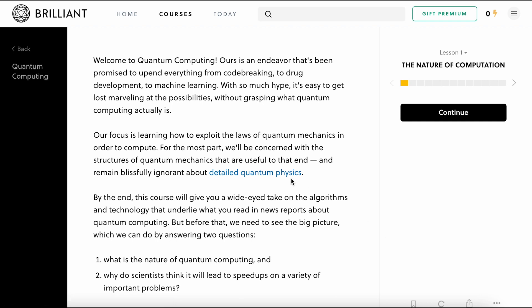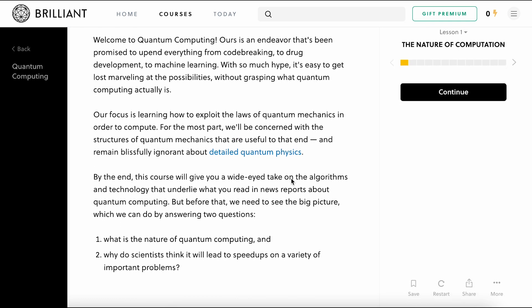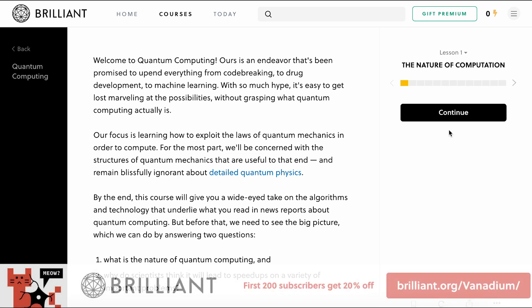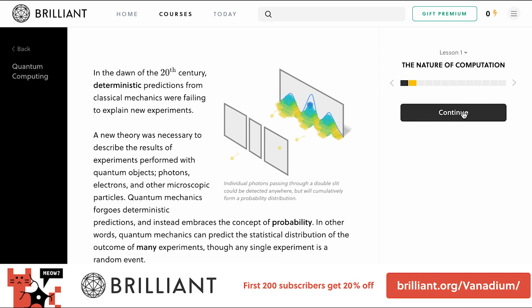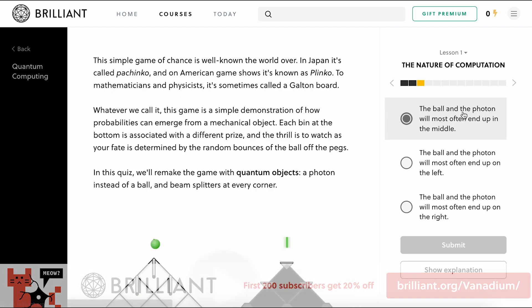After I'm done blowing your mind about the potential of quantum computers, check out some of their courses for free at Brilliant.org, or click the link in the description. For the esteemed Vanadium audience, they're offering 20% off the price of their annual subscription for the first 200 people.